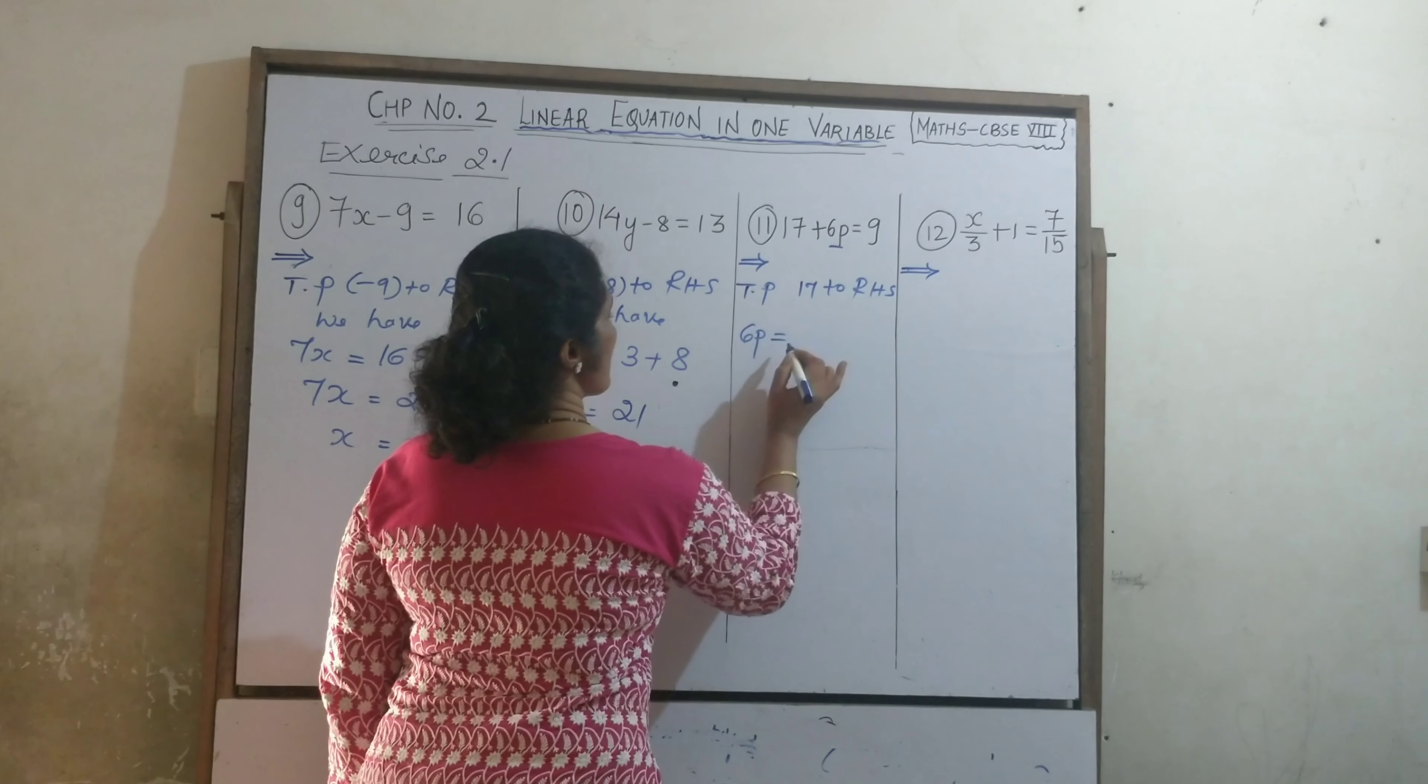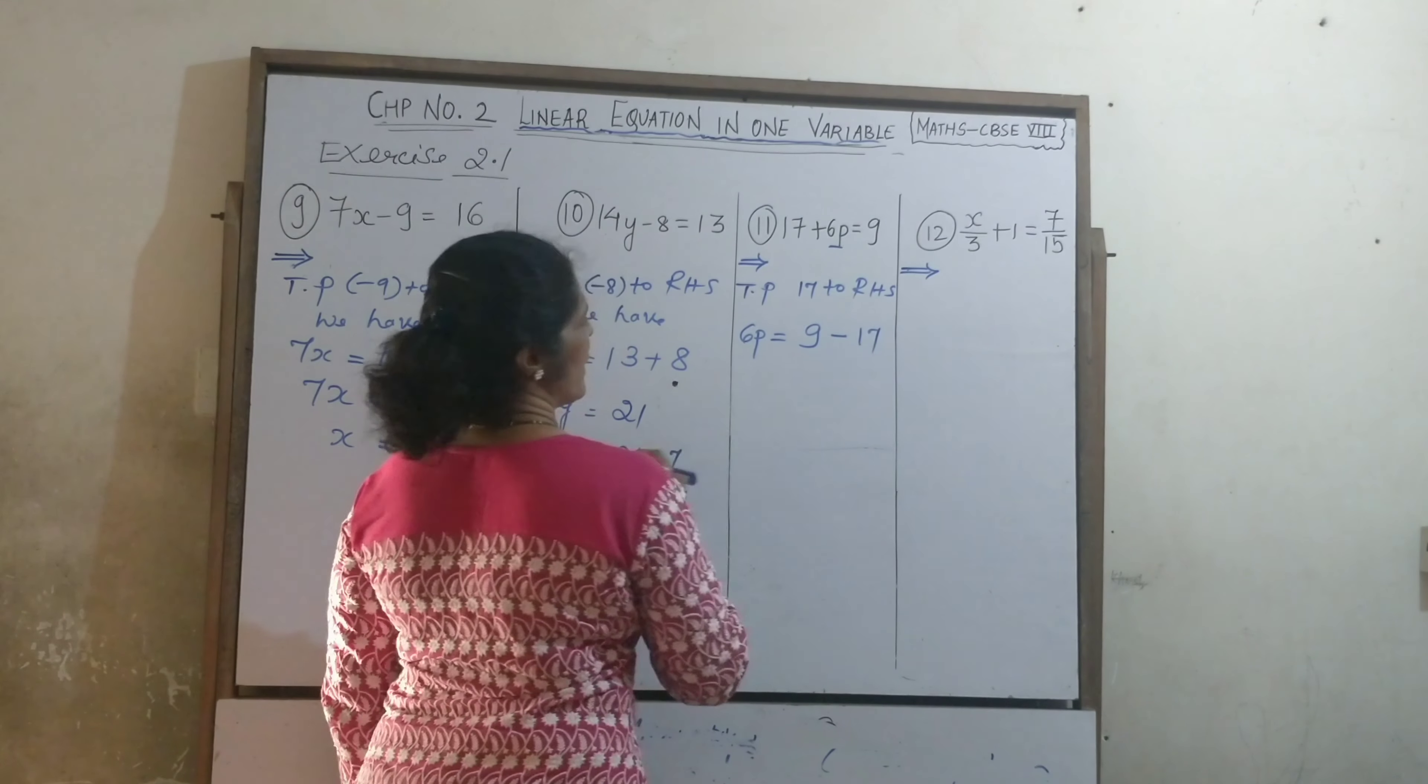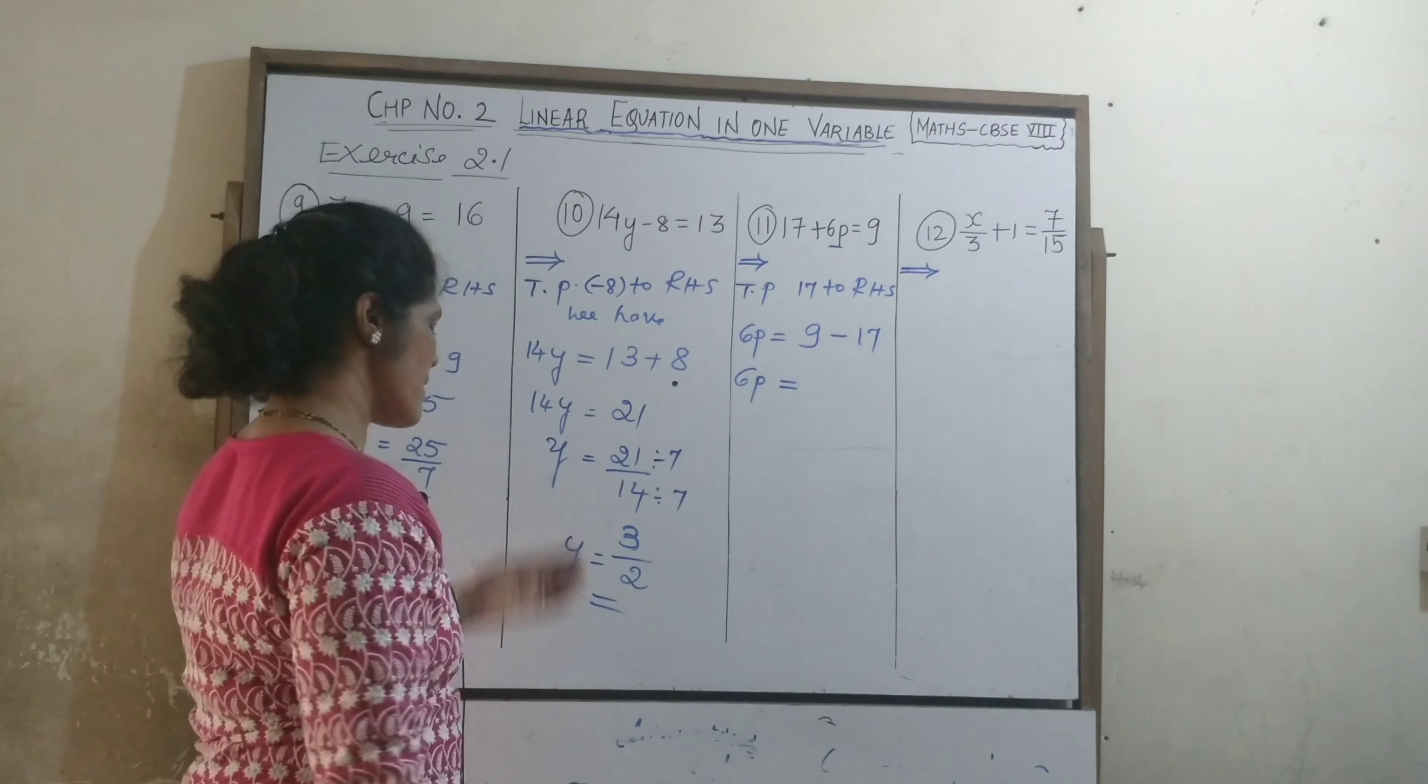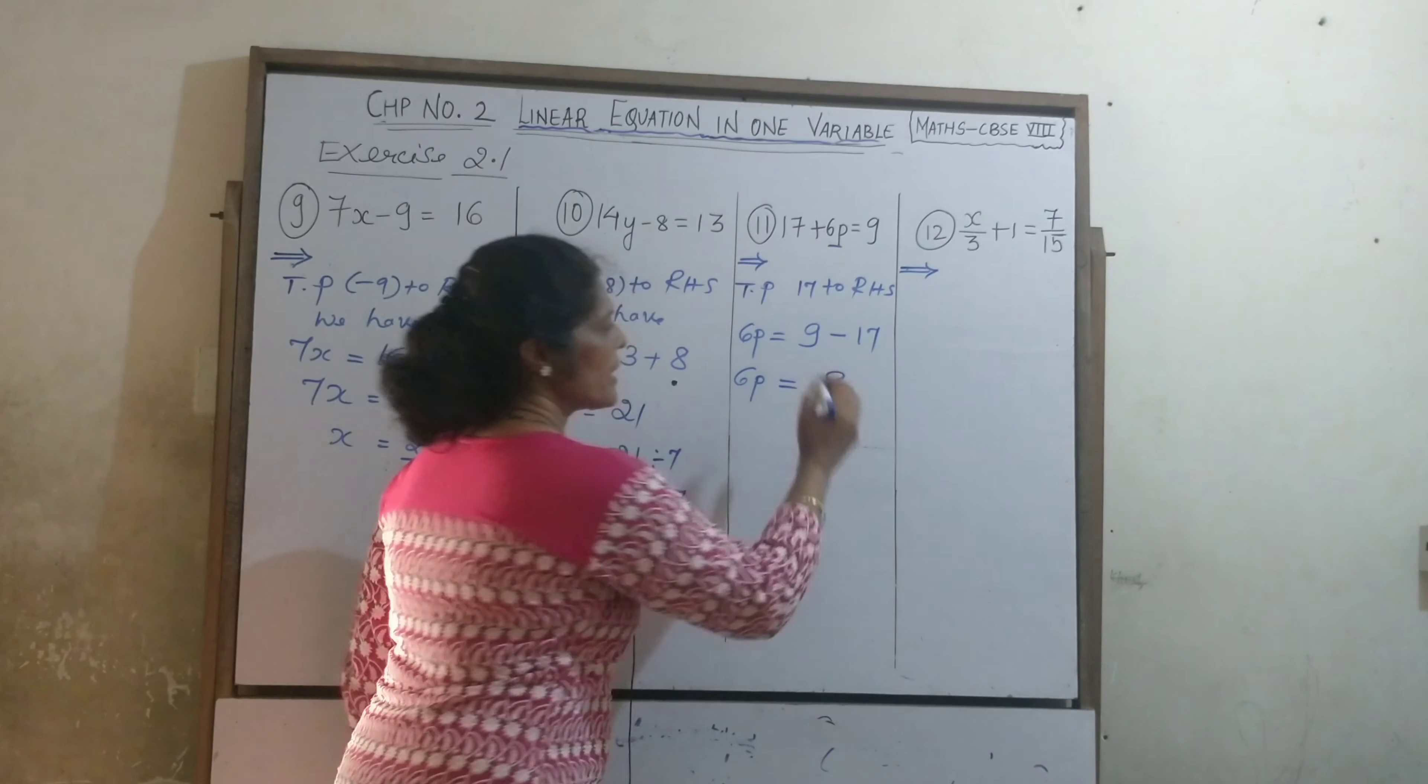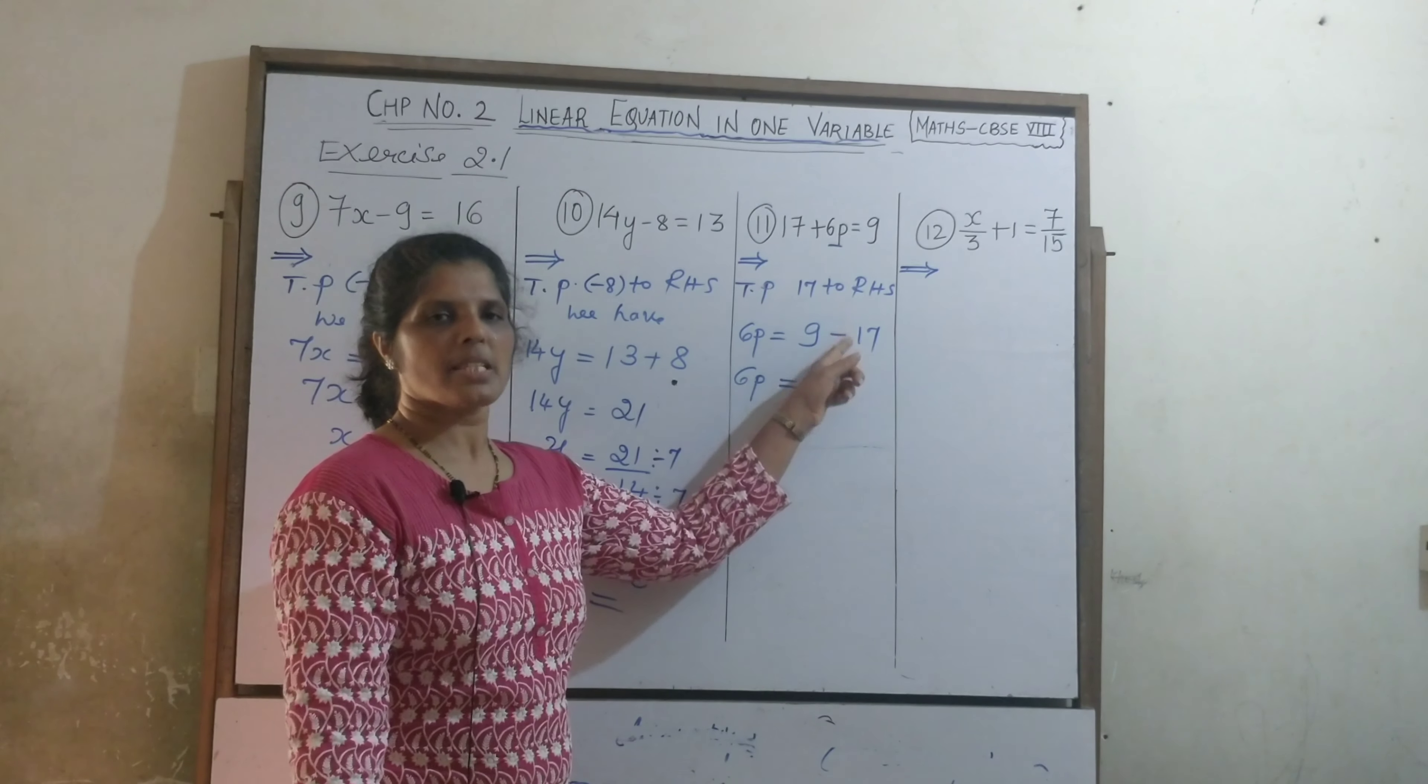So, 6p is equal to 9 minus 17. What is the answer here? 8. Which 8 here? This is plus, this is minus.